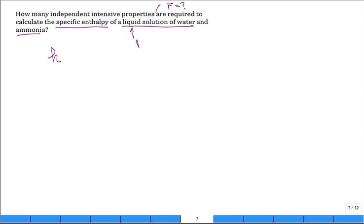So P is 1. N, water and ammonia, N is 2. So if I wanted to know the number F, the number of independent intensive properties so I'm able to calculate a property like specific enthalpy, using Gibbs phase rule, 2 plus N minus P. Let's substitute the numbers. 2 plus 2 minus 1. How many do I need? 3.